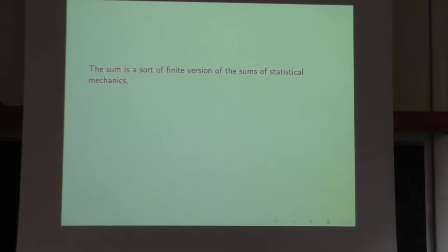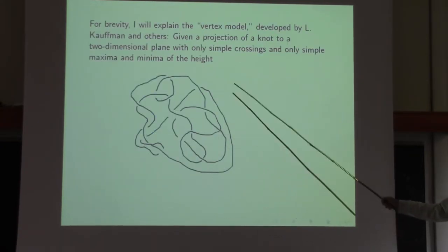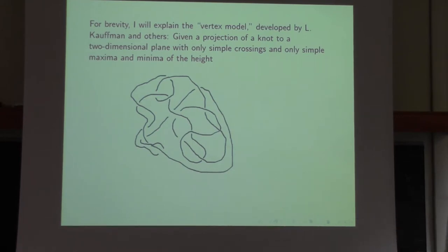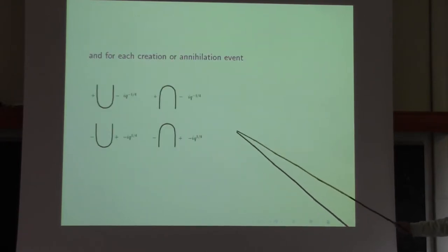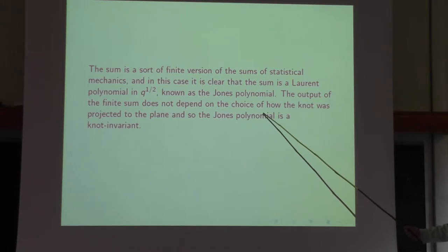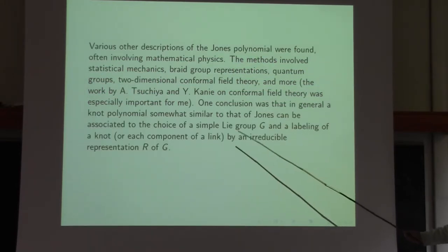The sum is a finite version of statistical mechanics. In the example of the knot we started with, there would be roughly 30 pieces, so we sum over roughly 2 to the 30 terms with these weights. Eventually we get a Laurent polynomial in q to the 1/2, which is known as the Jones polynomial.